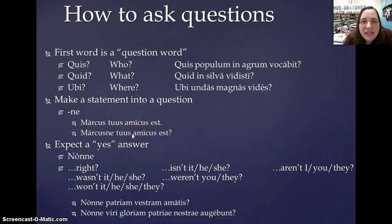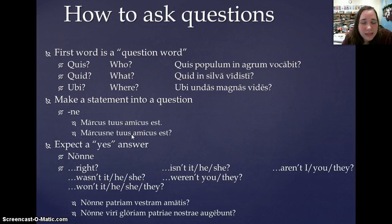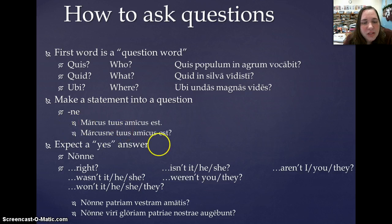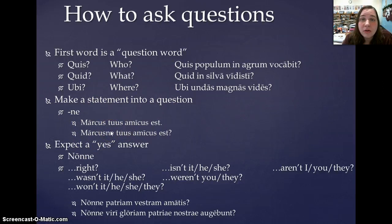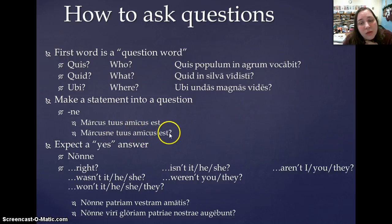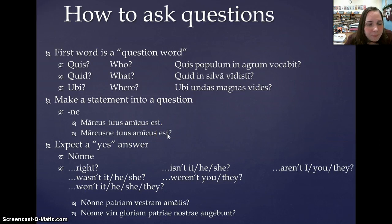It's interesting to remind you that the Romans did not have punctuation, or at least not consistently and certainly not early on. So the reason why we have the enclitic syllable -ne is to signal to people that we're asking a question, since the Romans did not use question marks.